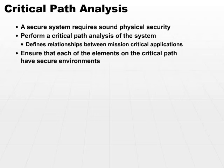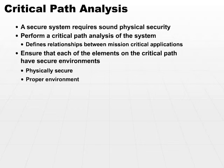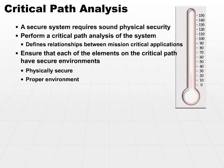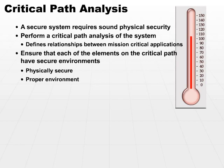Once you ensure that each of the elements on the critical path have secure environments, then you are on your way to developing a full facility sound physical security policy. Make sure that each individual element is physically secure and is provided with the proper environment. The proper environment may be the appropriate temperature — for example, a database server may be physically secure, but if it's running in a room reaching 105 degrees, it's not going to run very long. Because of the environment, it actually is not secure — if the machine crashes, you have availability failures.